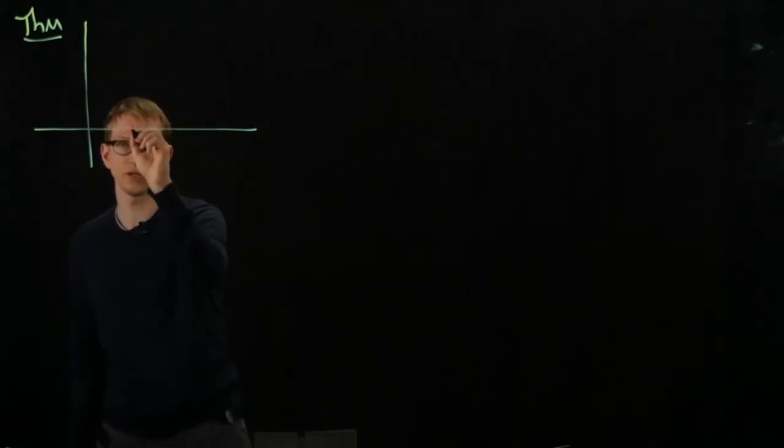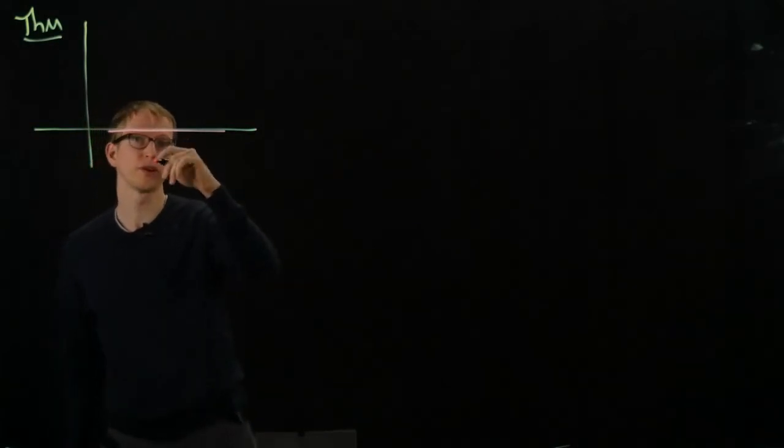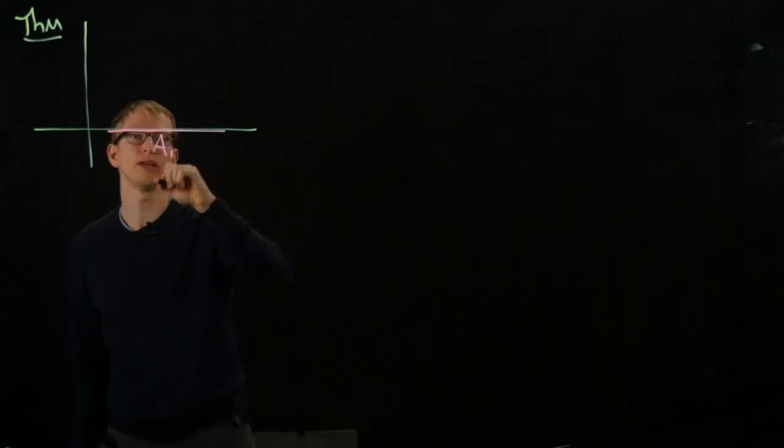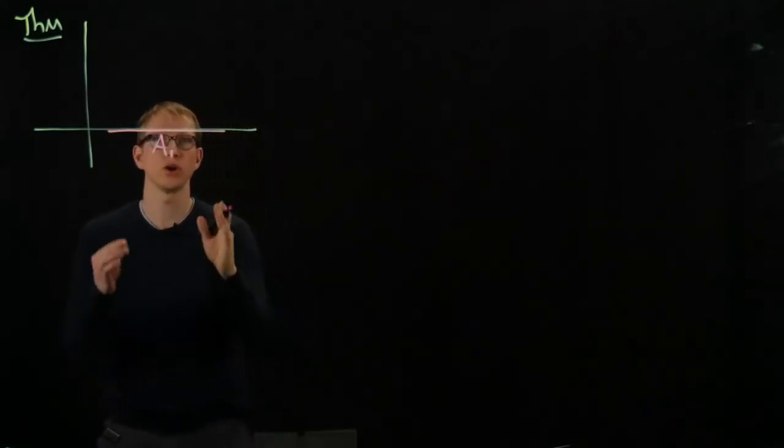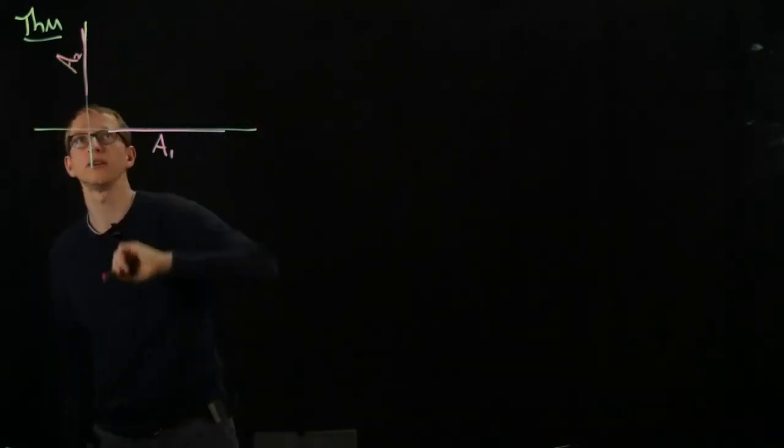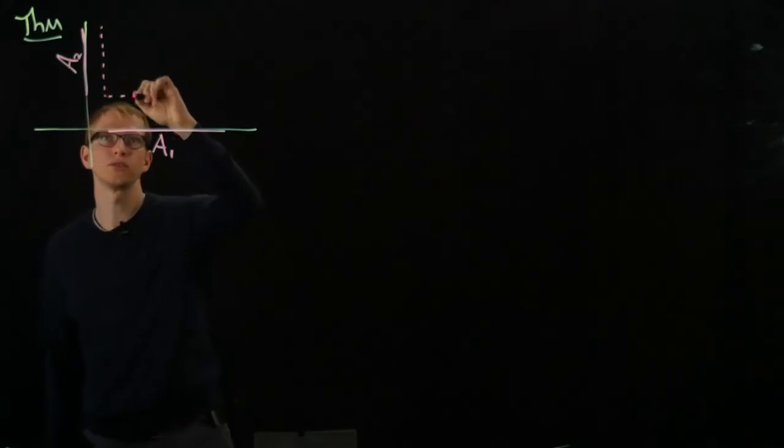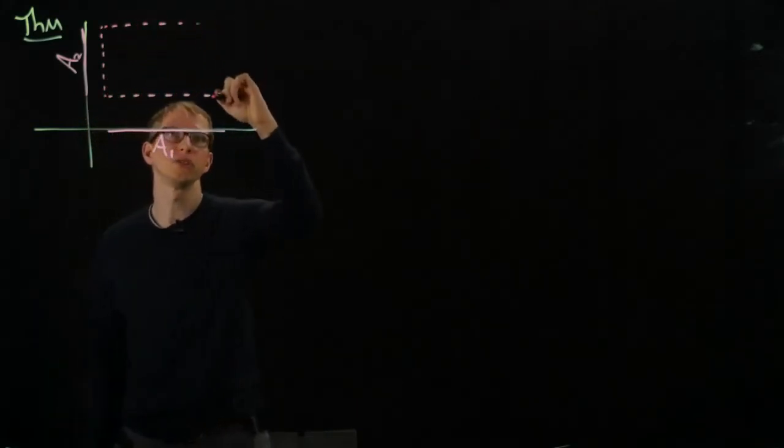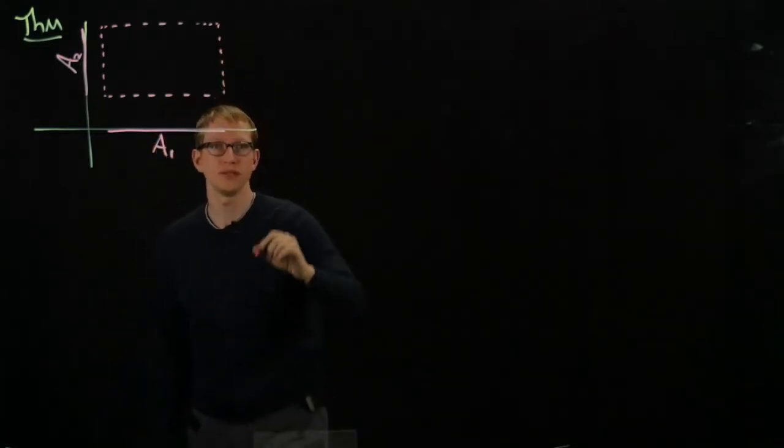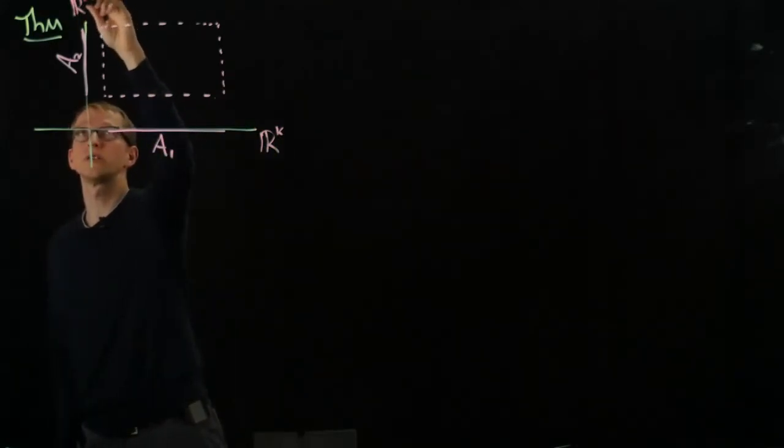So again, what we're going to have is another picture just like the one we had before for that pre-implicit function theorem, and we'll be focusing on a subset. This time, for convenience of the proof, which we won't get to now but later, let's set up the notation so that instead of calling our domain u, we'll call it a1. And our range on which the function is going to be defined is a1 cross a2. So again, we have this rectangle, which is just the cross product of two open subsets. Here, this is rk, and this is rn.